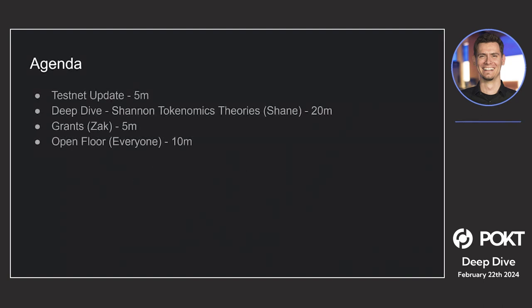TestNet update: progress is being made. We have finished the migration from Cosmos SDK 0.47 to 0.50. That migration changed a lot of how modules work within the Cosmos SDK, so it was a big change. The team has essentially got all the code ready. They're now doing reviews, and the goal this week was to start doing final reviews of the code, and we're at that point.